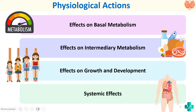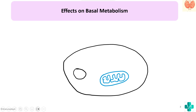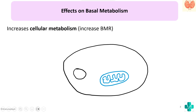Now we will see each one by one. What do you mean by effect on basal metabolism? The thyroid hormone can act on the cells and thereby increase the cellular metabolism — that means it can increase the basal metabolic rate. It increases the activity of the sodium potassium ATPase pump.